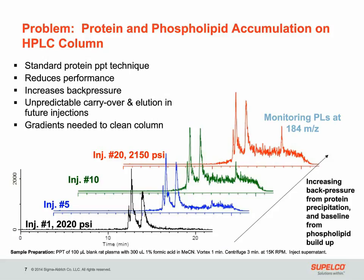The importance of this can be seen here. Without sample cleanup, both the back pressure and the baseline are increased after multiple injections. As you can see from the first injection, our back pressure is 2,020 PSI, and after 20 injections it goes up to 2,150 PSI. The background or baseline also increases dramatically from the first to the 20th injection. These are monitoring for phospholipids at a 184 mass-to-charge ratio. To prevent this, you would generally have to do some sort of gradient at the end of your run to clean off some of these proteins, which increases run length and decreases your throughput.